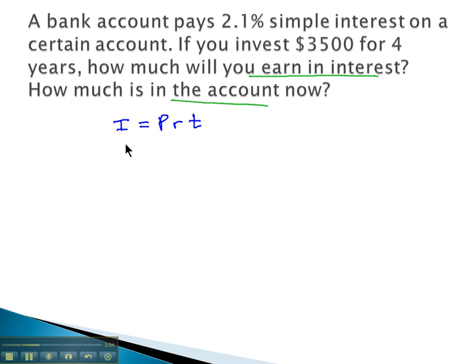So let's see if we can identify those values. We don't know how much interest is earned, but the principal, the starting amount in the investment, we do know is $3,500. That's what you invested in the account at the beginning. Then we multiply by the rate. The rate is the percent written as a decimal. So 2.1%, moving the decimal twice, is 0.021 for the rate.